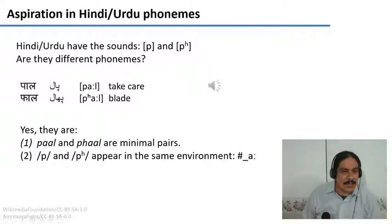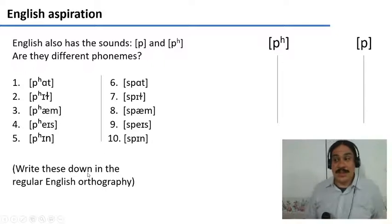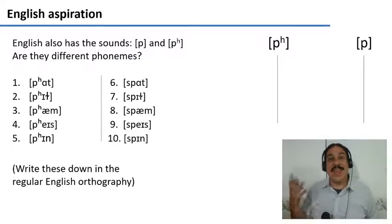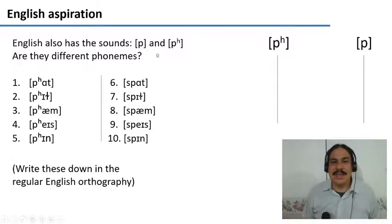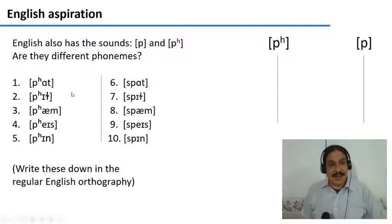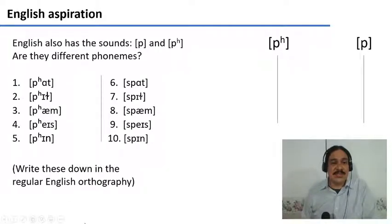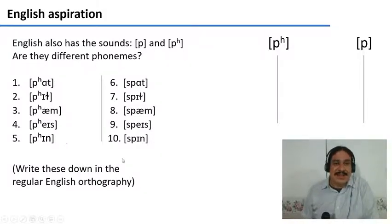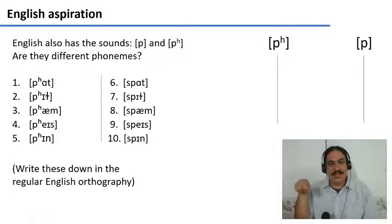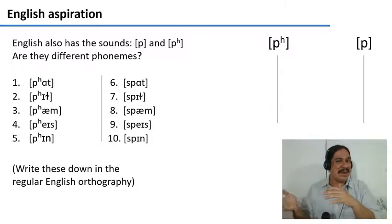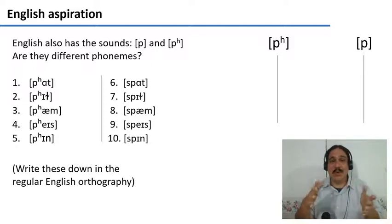We're going to write phonemes with slanted bars or slashes to indicate that they are phonemes. So that's what speakers of Hindi and Urdu would think, but what would speakers of English think when they hear these sounds? First, I want you to look at this English data set — 10 words in English. Write these words down in regular English orthography. Grab a piece of paper, say these out loud, and write them in the orthography you regularly use for English. Please pause the video.